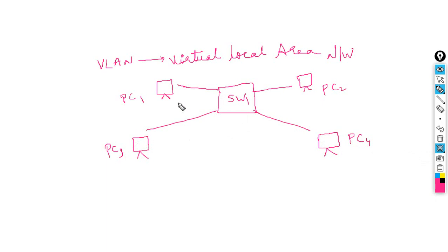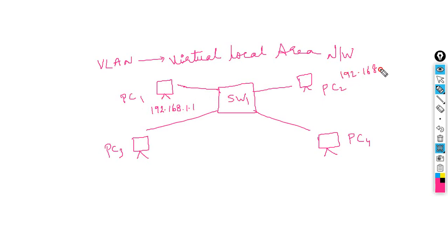The first time a PC powers on, the switch doesn't have its MAC address in the MAC table. The switch stores MAC entries in the MAC table and removes them after five minutes. So when PC1 at 192.168.1.1 tries to communicate with 192.168.1.2, the switch doesn't know PC2's MAC address and performs a broadcast.